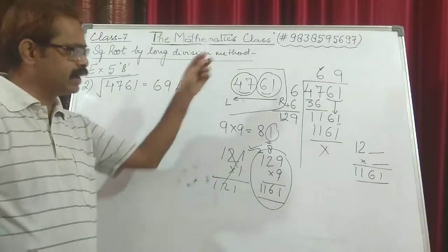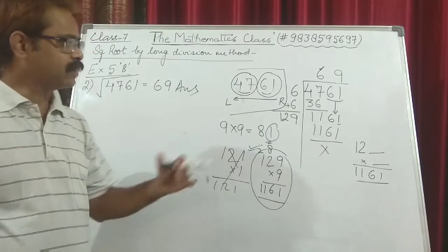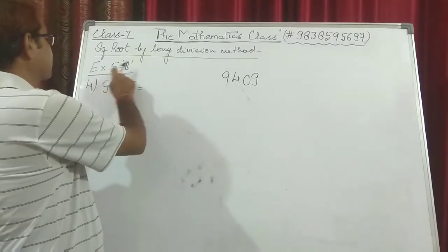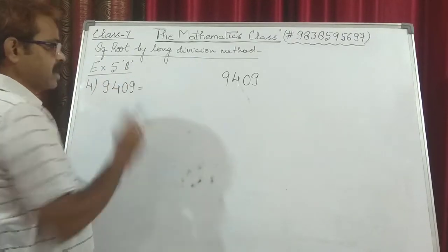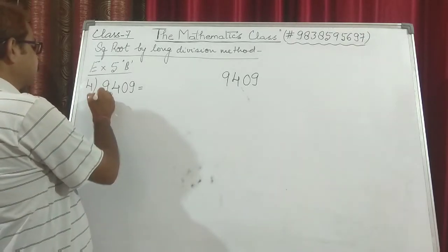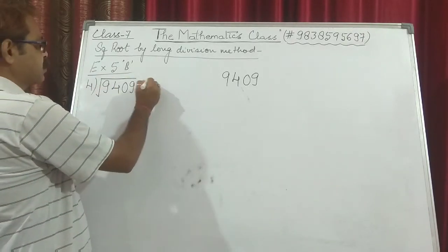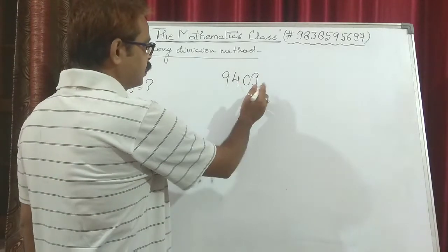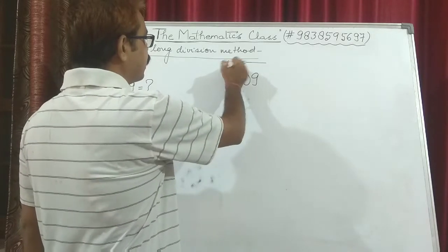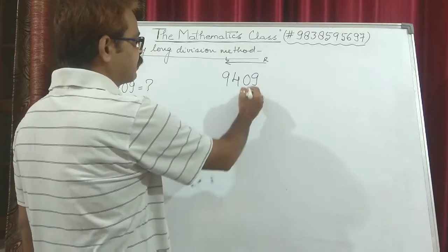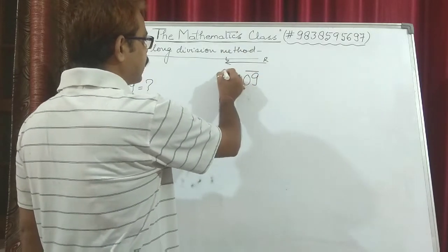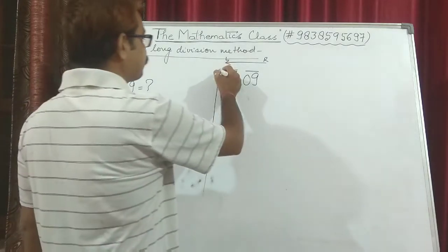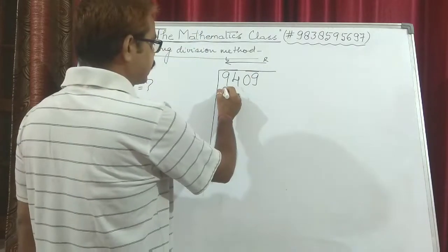Now we will take question number 4: find the square root of 9409 by division method. We have to find the value of √9409. First, we move from right to left making pairs: 09 is one pair, 94 is one pair. We make the division sign and the first pair is 94.